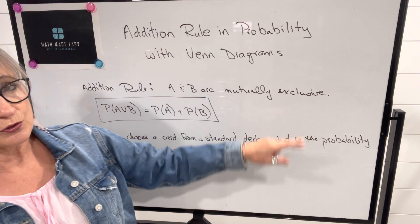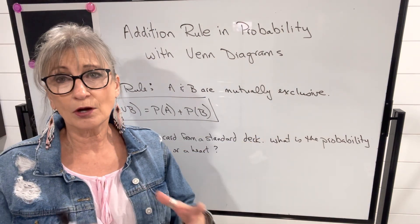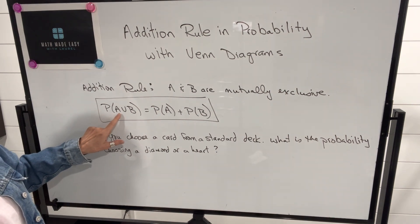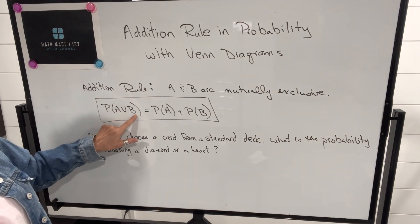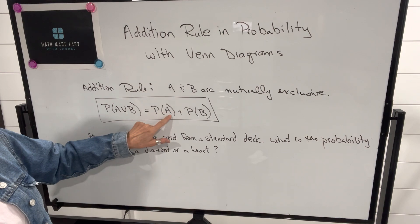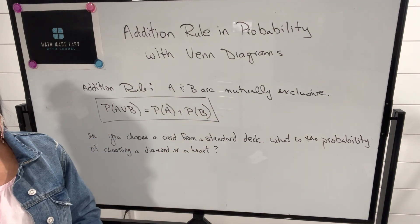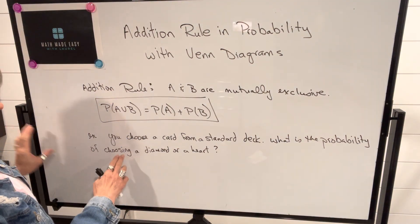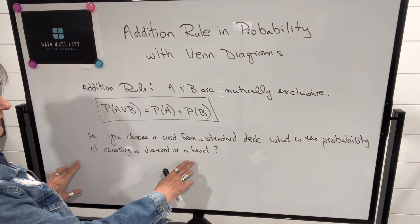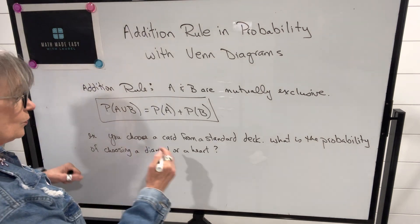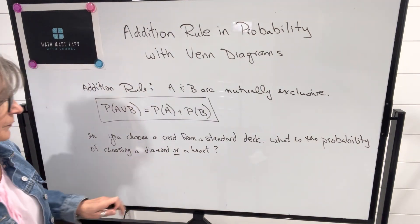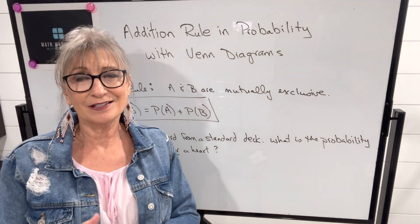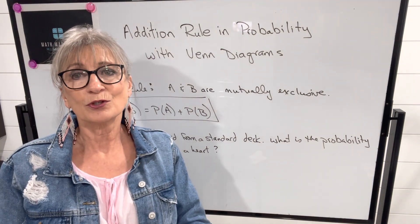In the event that they are mutually exclusive, which means they have no common elements to both, the probability of A or B will be equal to the probability of A plus the probability of B. The example from our last video was: you choose a card from a standard deck — what is the probability of choosing a diamond or a heart? These are mutually exclusive because you can't have a card that is both a diamond and a heart.